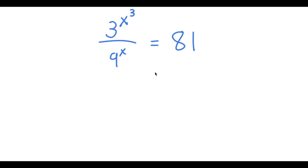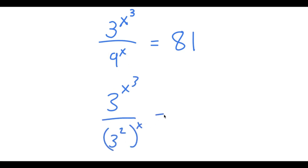In this problem, I have 3 to the power of x to the power of 3, over 9 to the power of x, is equal to 81. I'm going to first write 9 to the power of x as 3 squared to the power of x, and then write 81 as 3 to the power of 4.